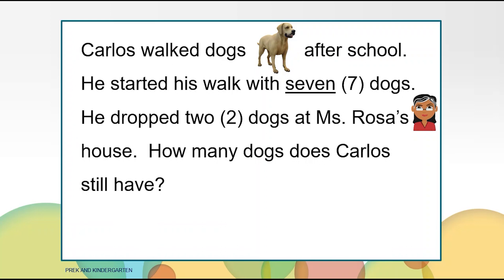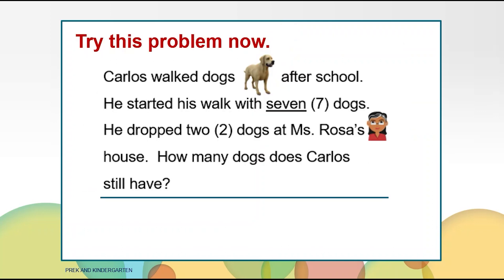He dropped two dogs at Miss Rose's house. How many dogs does Carlos still have? We have a question — we get to figure out how many dogs does Carlos still have. Let's read the story problem again. Carlos walked dogs after school. He started his walk with seven dogs. He dropped two dogs at Miss Rose's house. How many dogs does Carlos still have?